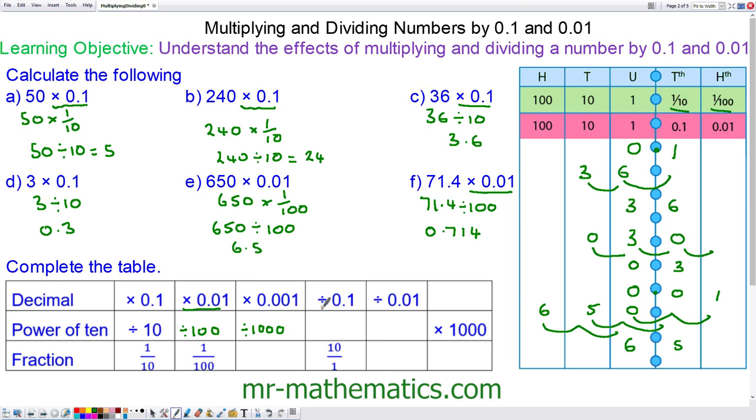Similarly, if you've got dividing by 0.1, this will be multiplied by 10. And that will be multiplied by 100. Multiplying by 0.001 is equivalent to dividing by one thousandth, which is 0.001.